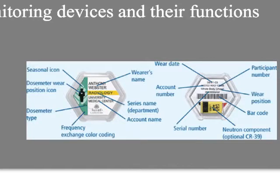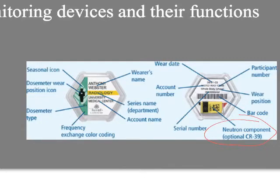If you turn your dosimeter over, there may be a little yellow packet in the window indentation — that's for neutrons. OSLs are not designed to capture alpha particles, neutrons, or positrons. They capture gamma and x-ray really well, and they capture beta well too. If you want to capture neutrons, you need a separate add-on.